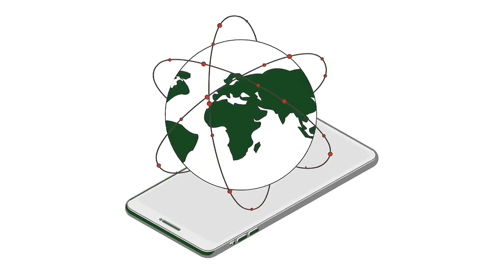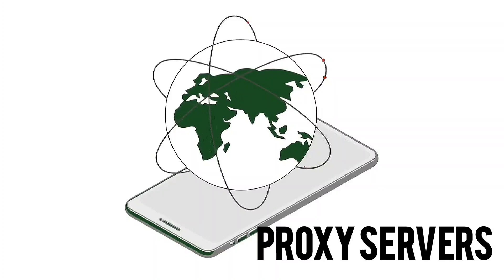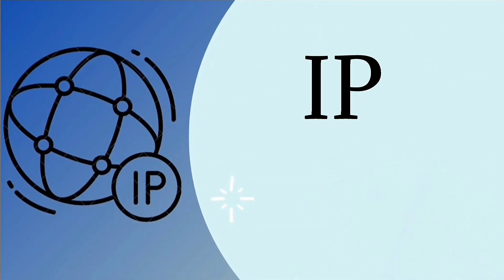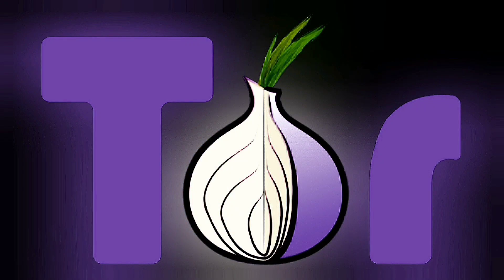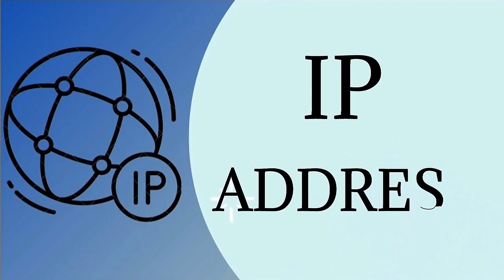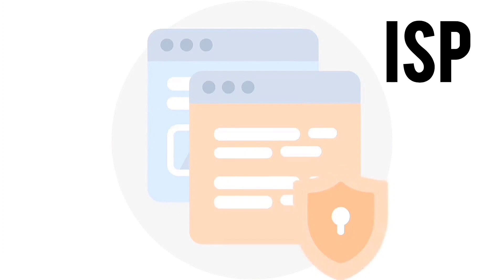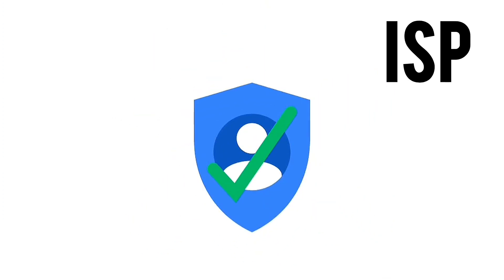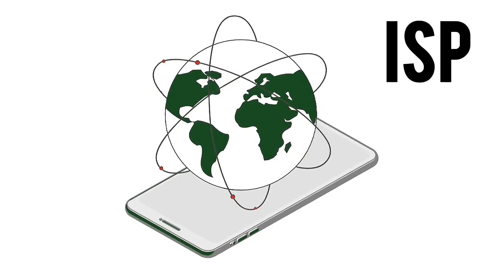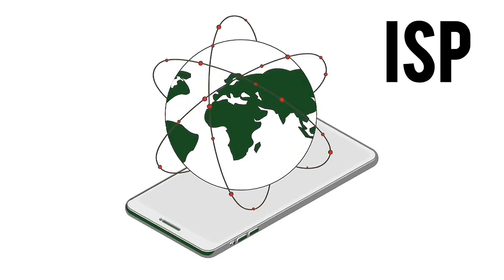Third, use proxy servers: proxy servers help hide your IP address, providing an additional layer of security. Fourth, use Tor or the Onion Router: Tor is a browser that allows you to access the internet anonymously; it hides your IP address and provides enhanced security for your online activities. Fifth, contact your internet service provider, or ISP: your ISP can provide additional solutions, such as assigning you a dynamic IP address that changes regularly.